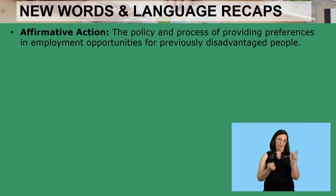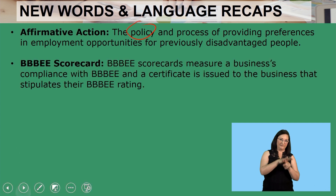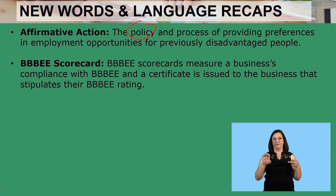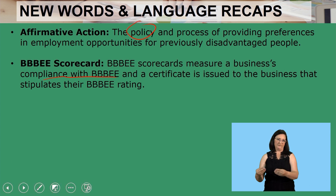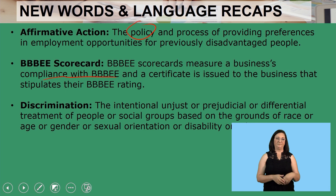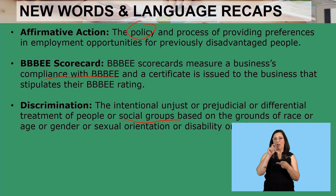Now we're going to recap on the new words we've learned throughout this lesson. We spoke about affirmative action — it is the policy and process of providing preferences and employment opportunities for the previously disadvantaged people. We looked at the Triple BEE scorecard, which measures a business's compliance with Triple BEE, and a certificate is issued to the business that stipulates their Triple BEE rating. Lastly, we looked at discrimination — it's the intentional, unjust, or prejudicial differential treatment of people or social groups on the grounds of race, age, gender, sexual orientation, disability, or religion.